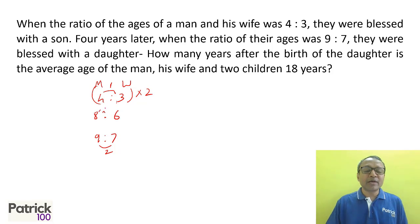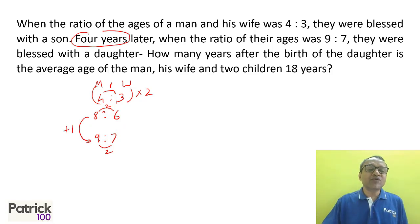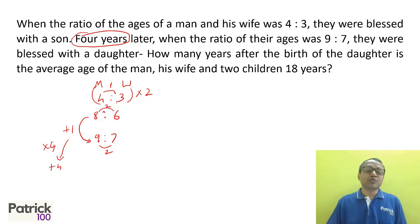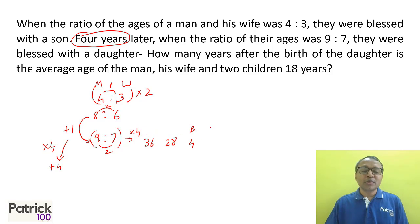Now 8:6 and 9:7 both have a difference of 2 — that's what we want. To go from 8 to 9 you add 1, but the problem says 4 years later, so multiply by 4. The current age of the man becomes 9×4 = 36 years and the wife becomes 7×4 = 28 years. The boy is 4 years old when the daughter is born, and the girl is 0 years old.